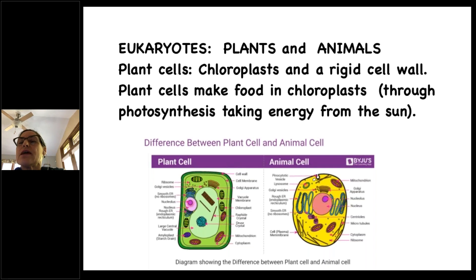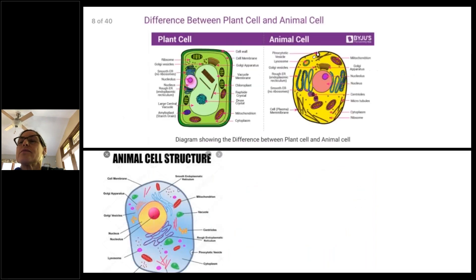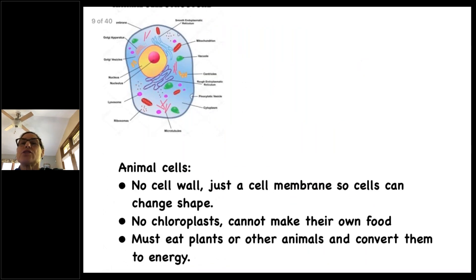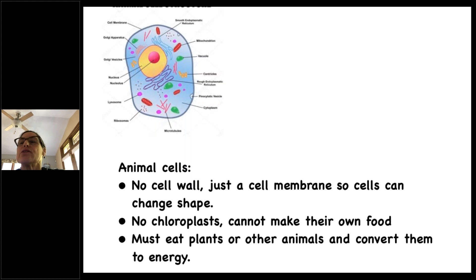You can see they have a lot of structures inside them. The animal cell does not have a cell wall — just a cell membrane — so cells can change shape. Animal cells don't have chloroplasts and cannot make their own food. Humans and animals must eat plants or other animals and convert them to energy.